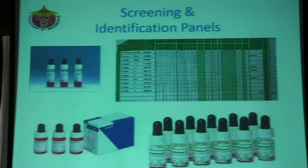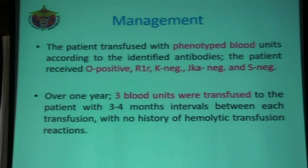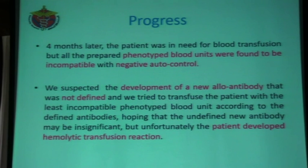To manage our patient, we went to our regular donor database and issued O-positive R1r, K-negative, JKA-negative, and S-negative blood for this patient. Over one year, the patient received three blood units with a gap of three to four months between each transfusion. Four months later, the patient — who was now pregnant — was in need of blood again. We prepared four blood units of the same phenotype and tried the crossmatch. Unfortunately, the crossmatch was positive. We suspected the patient had developed a new allo antibody. We attempted to transfuse the patient with one of these units, but unfortunately the patient developed severe hemolytic transfusion reaction, indicating this antibody was highly immunogenic and capable of causing hemolysis.